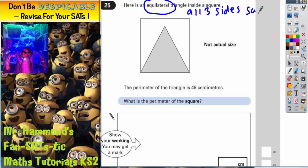And we know that this adds up to 48, but all three are the same. So if we do 48 divided by 3, we will work out what one of the sides of the triangle is.